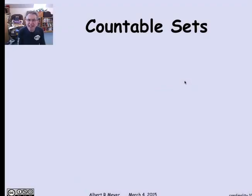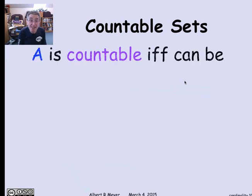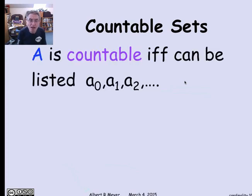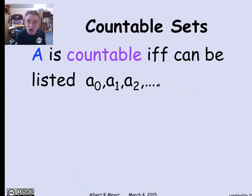We come to the idea of countable sets, which is the most familiar kind of infinite sets. A countable set is one where you can list the elements: a0, a1, a2, and so on. There's a list of all of the elements of A in which every element appears at some point. You can count up to any given element of A, and every element you will eventually get to.